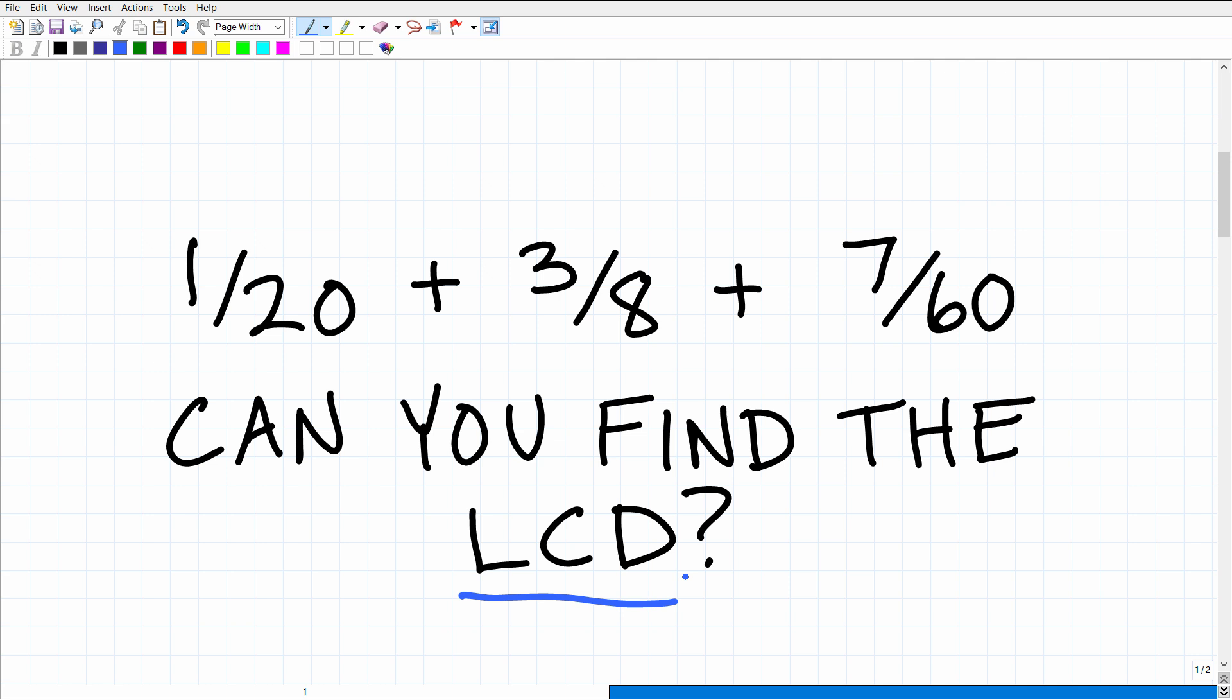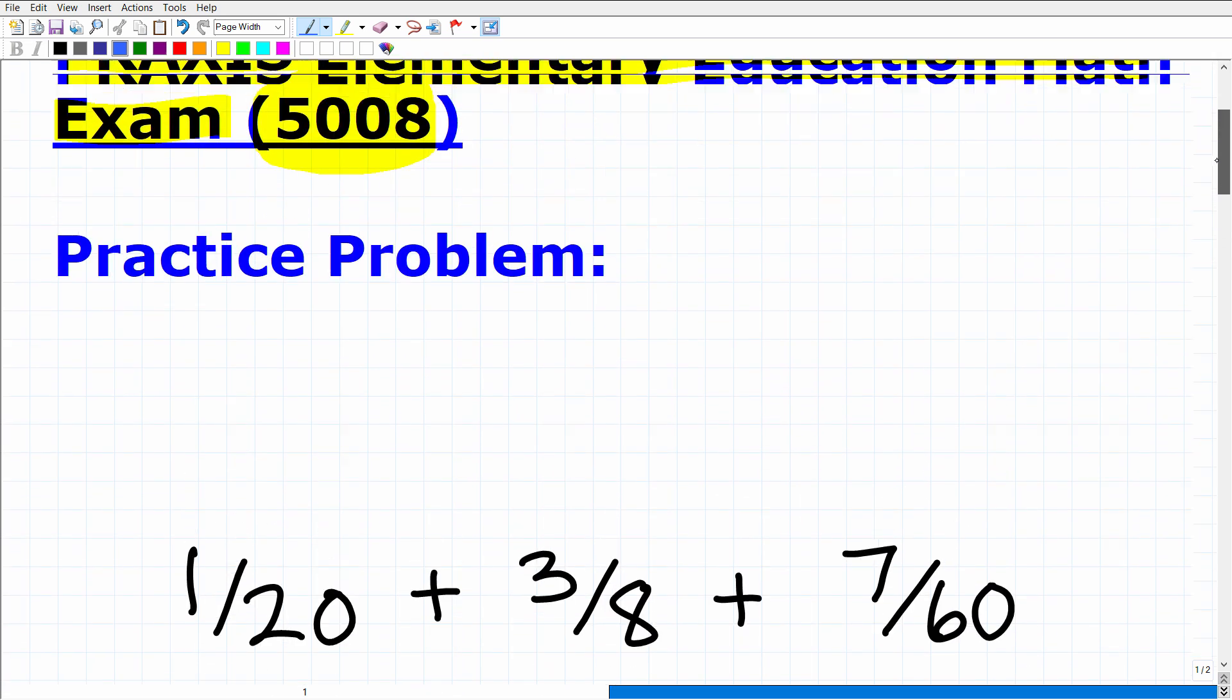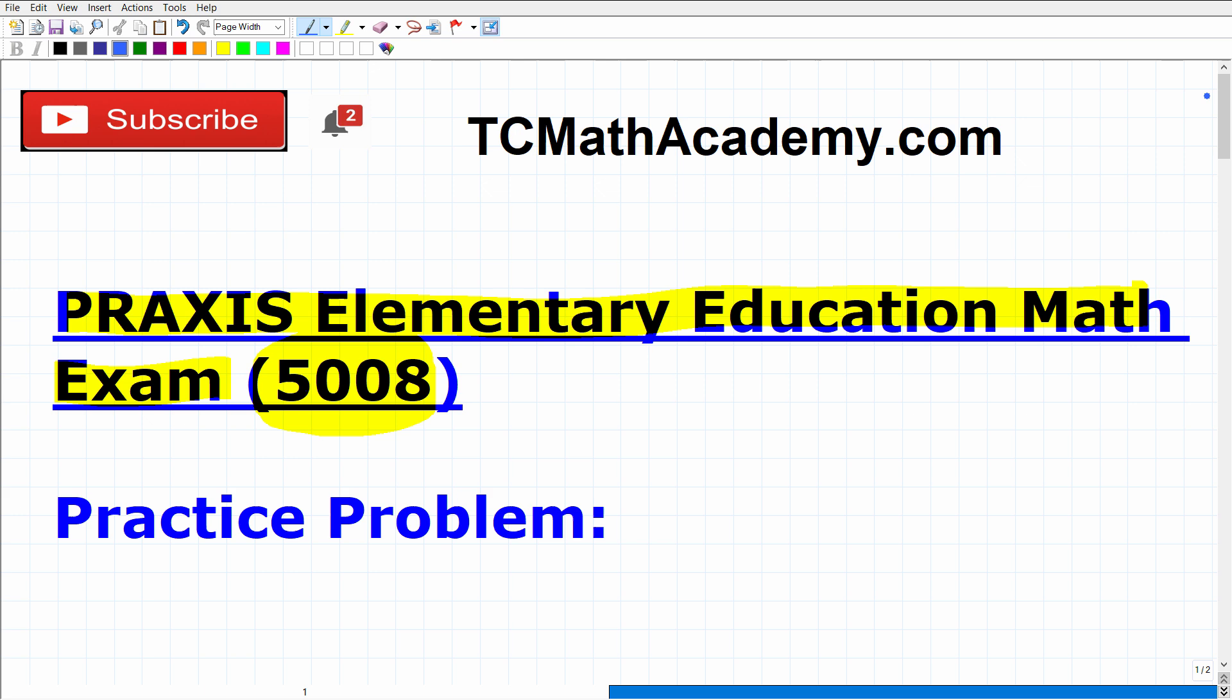So even though you can do this problem, how do you find, what is the algorithm, what is the procedure, what's the process of finding the LCD when you have two or more fractions? Of course, I'm going to cover all of this in just one second. Matter of fact, I'll show you the right answer in a moment. But before we get going, let me quickly introduce myself.